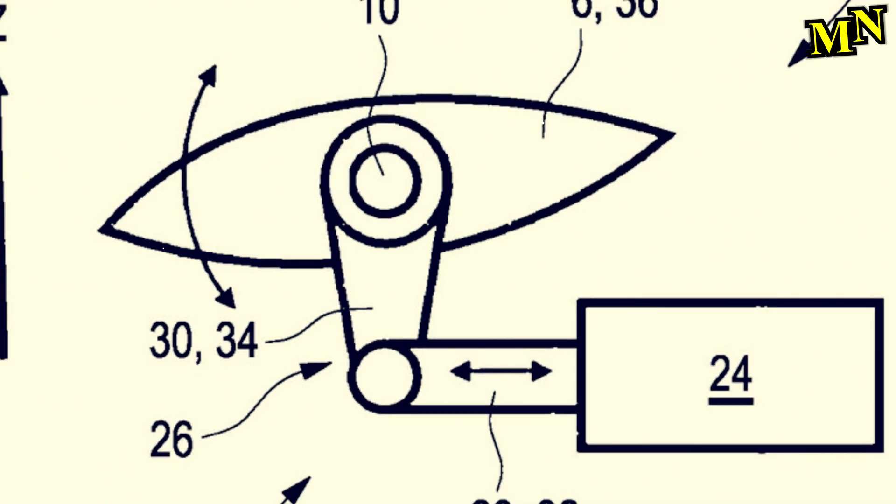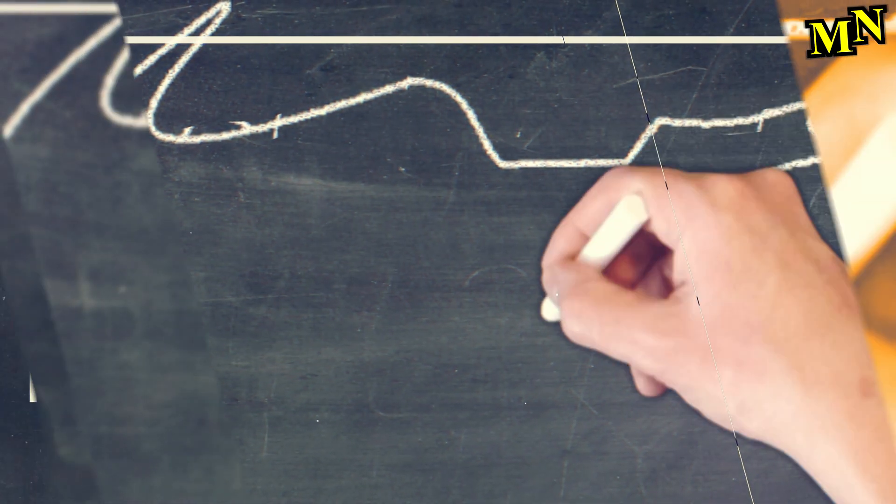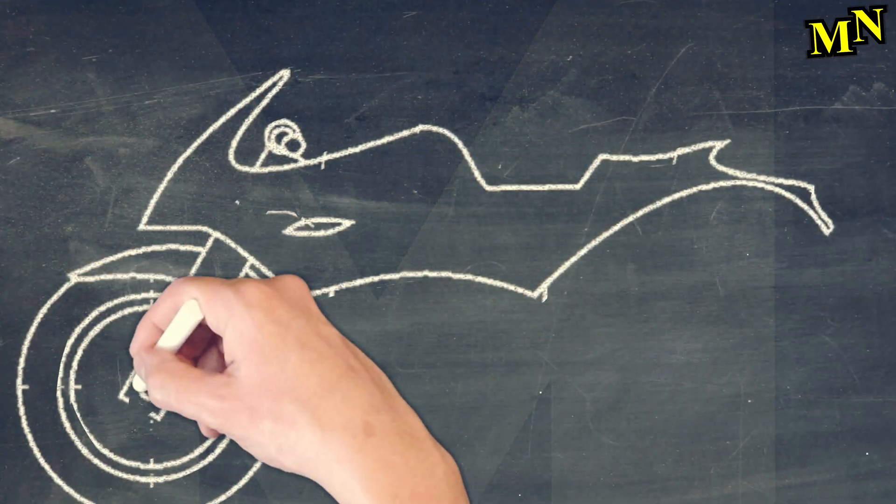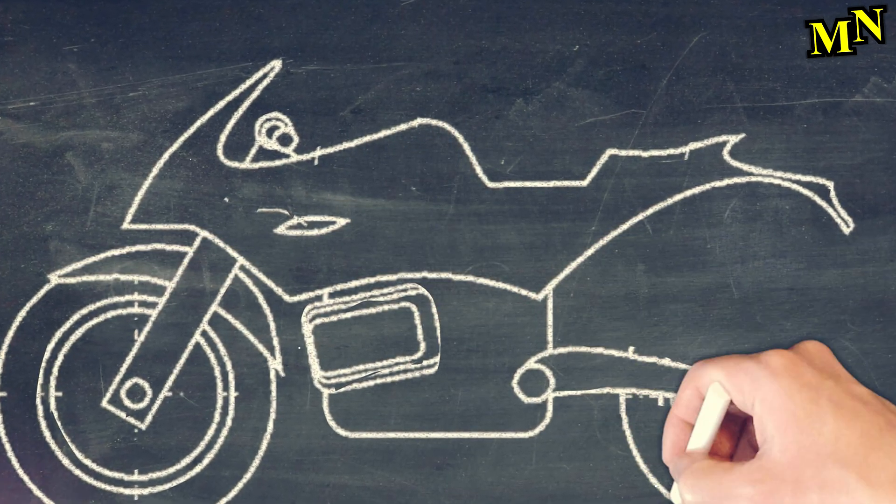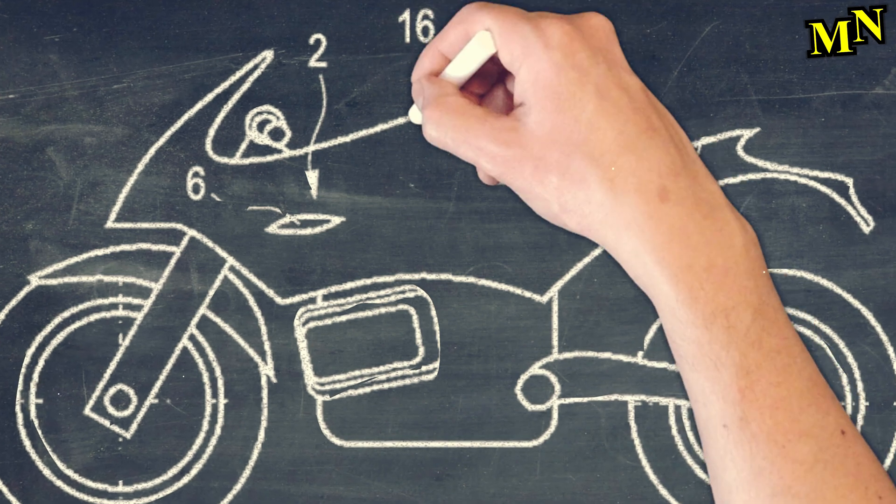This could give the motorcycle better traction when accelerating, support cornering, stabilize high speeds, or even shorten braking by adding drag. The drawings of the patent application are only very schematic.